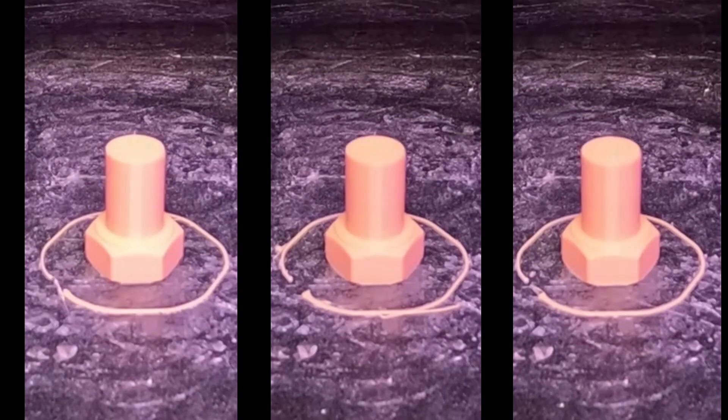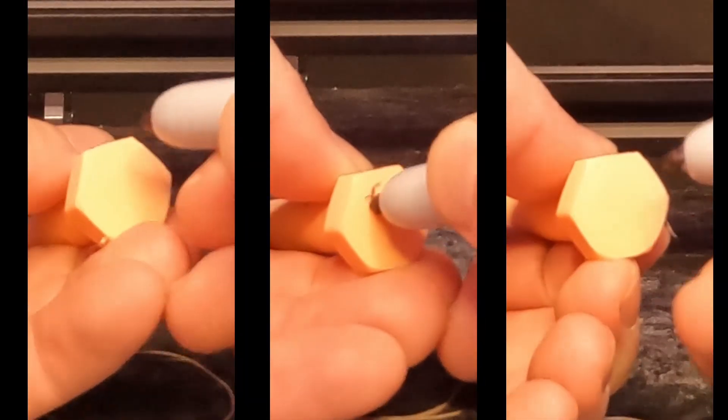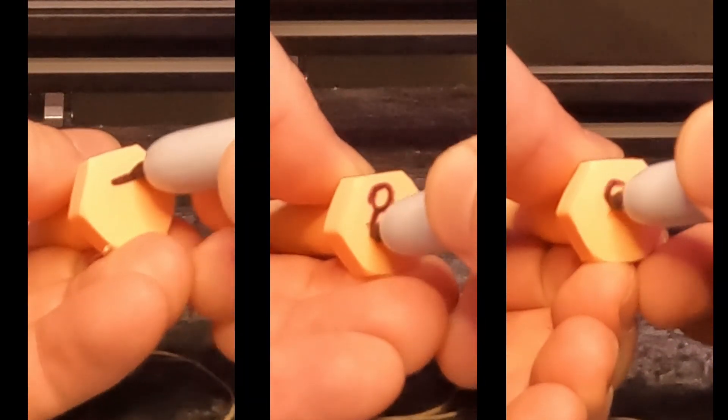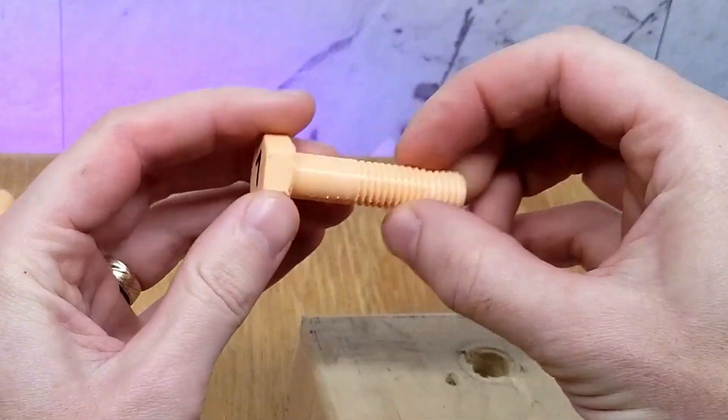Continuing on, here are models seven, eight, and nine. Each are different wall thicknesses at 60% infill. Just labeling them each real quick and let's get to the testing beginning with screw number seven.